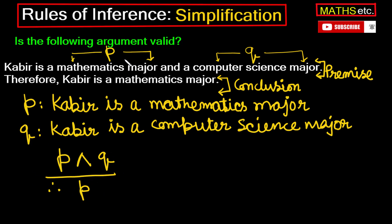Agar yeh argument form valid hai, toh yeh argument bhi valid ho jayega. Yeh argument form kab valid hogi? Jab yeh premise jo hai — p and q — agar true hai, toh iske jo conclusion hai, usko true hona padega. Kyunki yeh conjunction hai, or conjunction true hone ka matlab hai ki woh atomic propositions jinse conjunction bana hai, unhe dono true hona chahiye. So p and q agar true hai, toh p bhi true hona chahiye. Conjunction ki definition se hum dekh sakte hain ki jab bhi p conjunction q true hai, toh jo conclusion p hai, woh true hoga. So yeh humare paas jo argument form ho gayi, woh valid argument form hai.